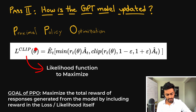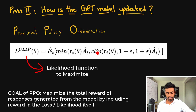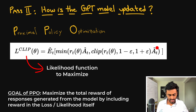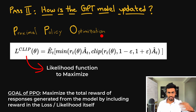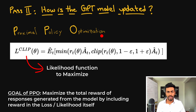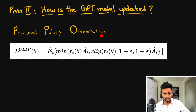The parameters theta are those of our original GPT model. I'll explain the individual terms in the next pass. For now, the key point is that proximal policy optimization is trying to maximize the total reward seen by our network.